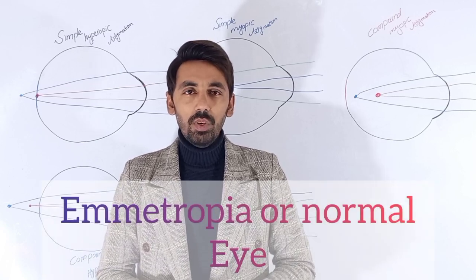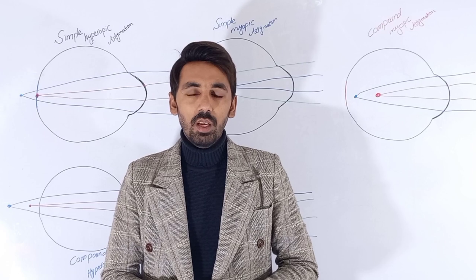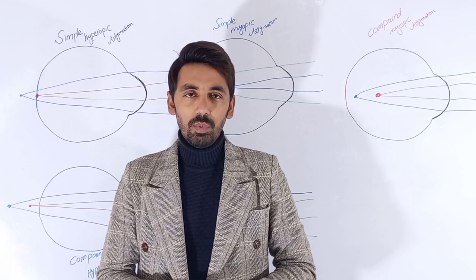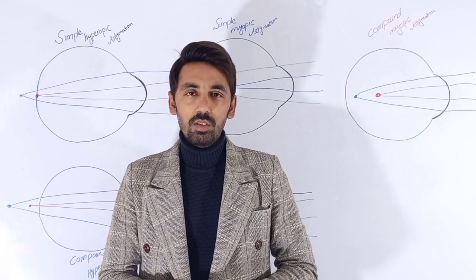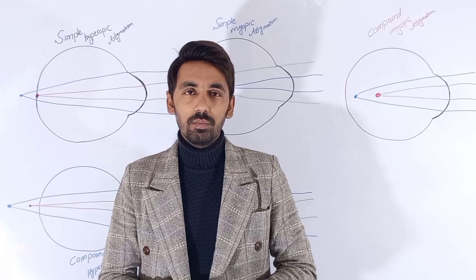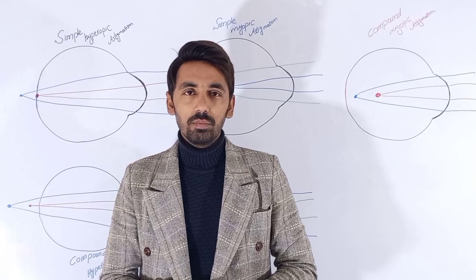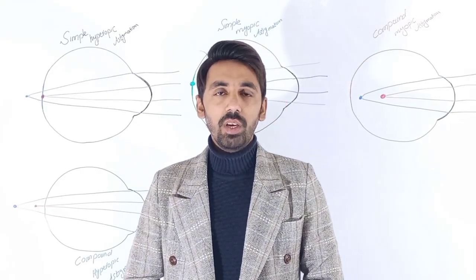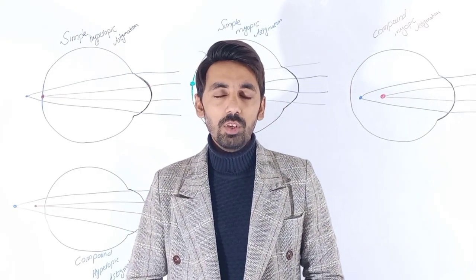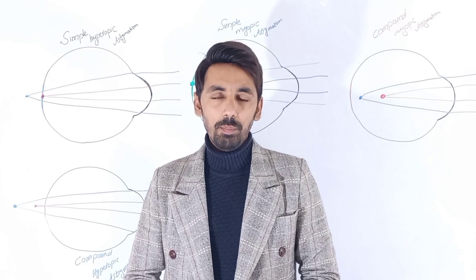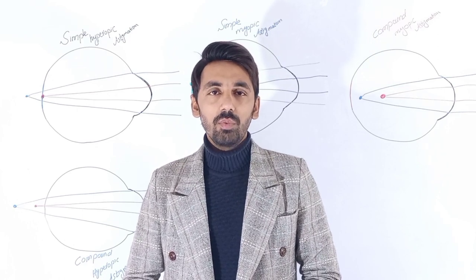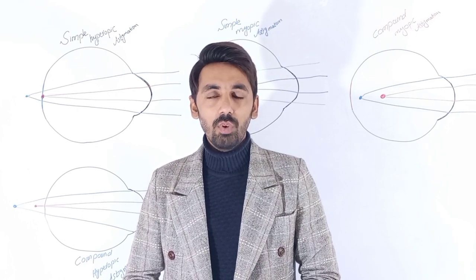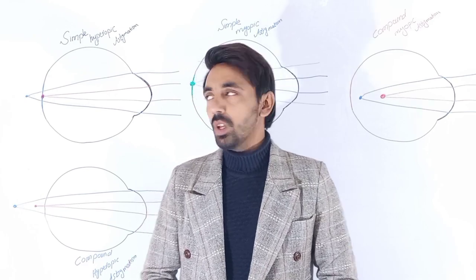In this video we will discuss about astigmatism and the different types of astigmatism on the basis of the location of the focal point. We will discuss three different types: the first one is called simple astigmatism, the second one is called compound astigmatism, and the third one is called mixed astigmatism.